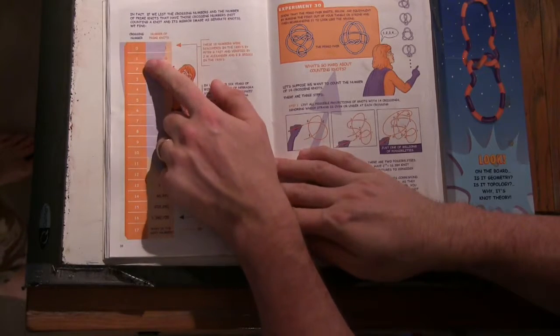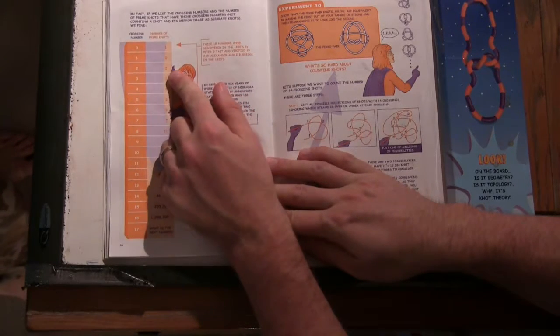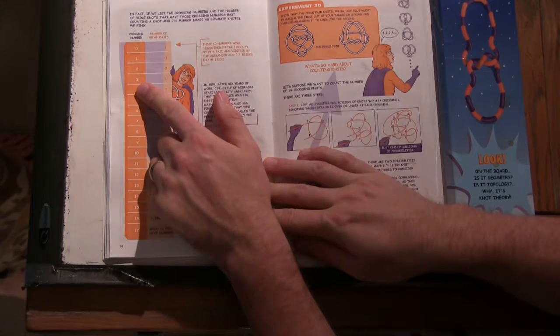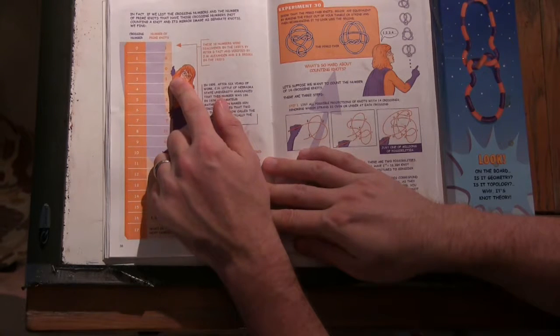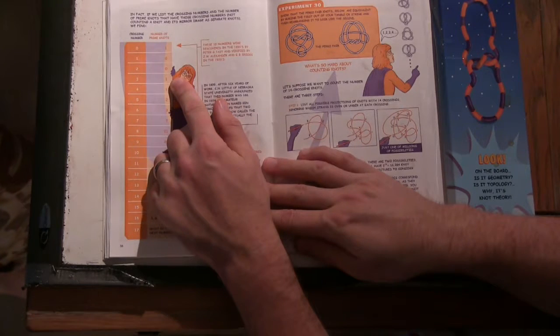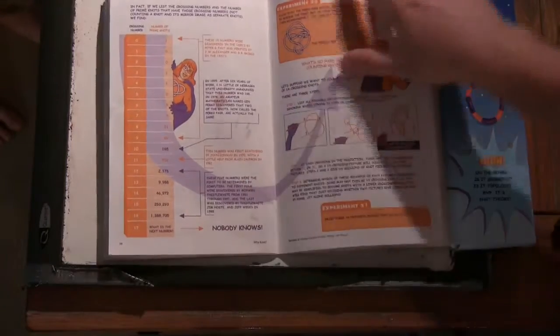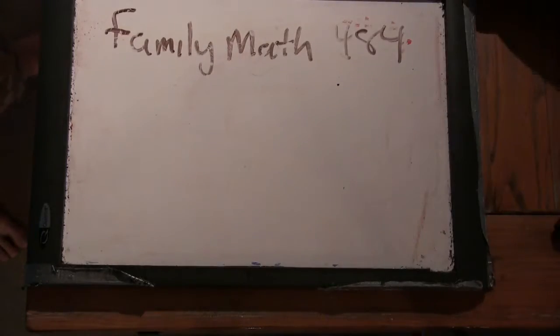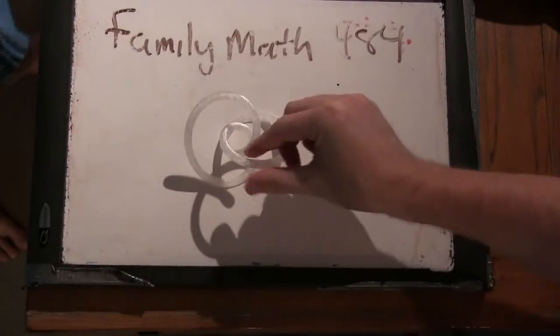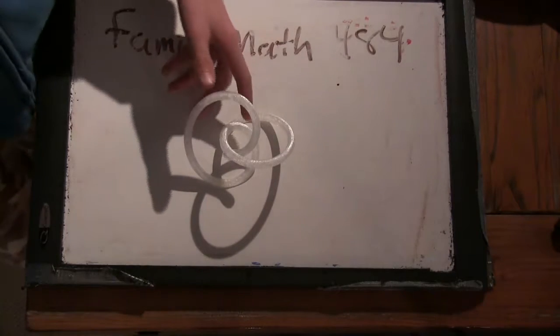There are no knots with just one or two crossings. Yeah. And there, with three crossings, that's the trefoil knot. That's the trefoil knot. There is only one knot. So, that's the only trefoil knot. You can't make any other knots. So, this knot must have also had three crossings,